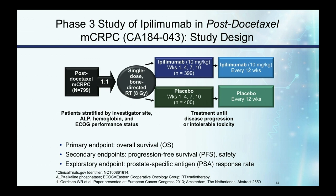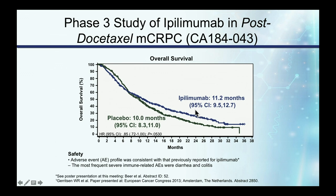Other checkpoint inhibitors have been evaluated. Ipilimumab, which inhibits CTLA-4, was evaluated in patients with metastatic prostate cancer who had failed docetaxel. Patients received one dose of radiation therapy to induce the abscopal effect — releasing antigens to potentially sensitize patients to the immune agent — then were randomized to ipilimumab or placebo. There was no overall survival difference for all comers, but bone-only patients did have a survival benefit, and had the trial been designed for bone metastasis only, it would have been a positive study.